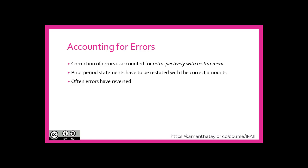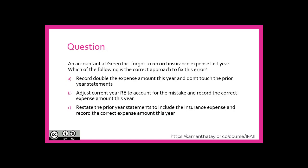Let's look at a question. An accountant at Green Inc. forgot to record insurance expense last year. Which of the following is the correct approach to fix this? A: Record the double expense in this year and don't touch the prior year statements. B: Adjust current year retained earnings to account for this mistake and record the correct expense amount this year. C: Restate the prior year statements to include the insurance expense and record the correct expense amount in this year.